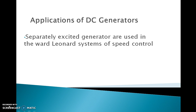There are two types of DC generators: one is the separately excited and the second is the self-excited DC generator. Separately excited DC generators are those whose field magnets are energized from an independent external source of DC current. Whereas self-excited DC generators are those whose field magnets are energized by the current produced by the generators themselves.